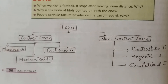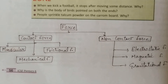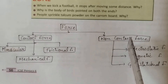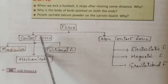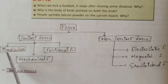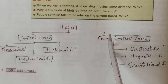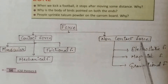When we apply force, the direction can be changed. When a body is at rest, it can be moved, or a moving body can be brought to rest. We have studied the types of force: contact force and non-contact force. Contact force is divided into three parts — muscular force, mechanical force, and frictional force. Non-contact force is also divided into three types — electrostatic force, magnetic force, and gravitational force.